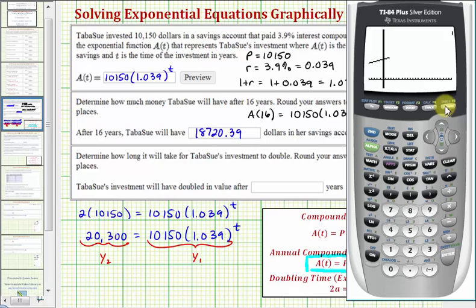So here's the exponential function, and here's our constant function, A(T) equals 20,300. We want to find this point of intersection. The X coordinate, which is really the T coordinate, will tell us how long it takes for the investment to double.